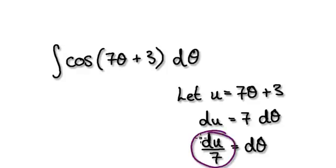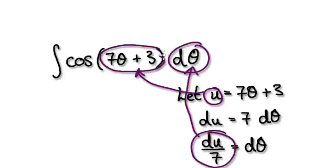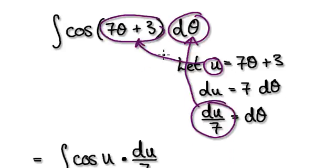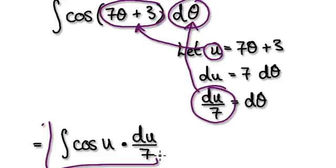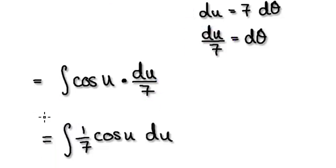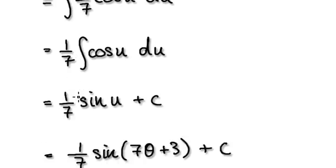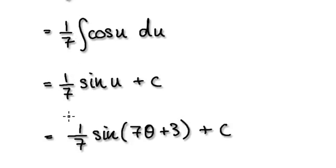So now we can put this into here, and we can put the u into this whole thing here. That would become this. Now it's getting simpler — that then becomes this. Take the 1 over 7 out, and it equals this.